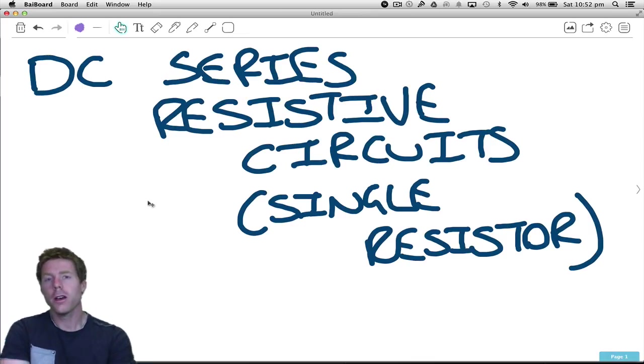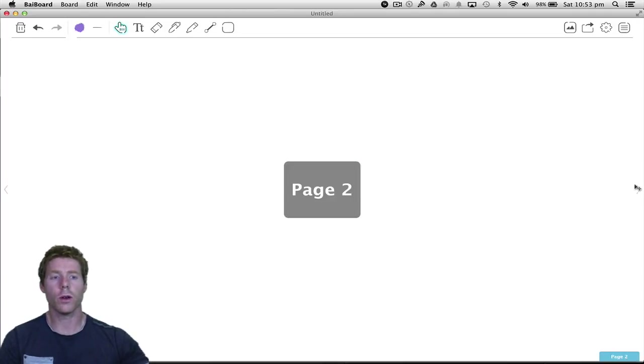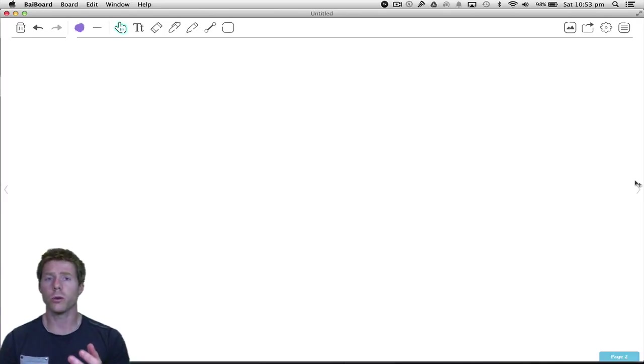Welcome to this next lecture. This lecture deals with DC series resistive circuits using a single resistor. After this one we'll start to get into multiple resistors and more calculations to figure out exactly what's going on in the circuit. This one is to give you more grounding in finding unknown values, using your calculator, and understanding Ohm's Law better.